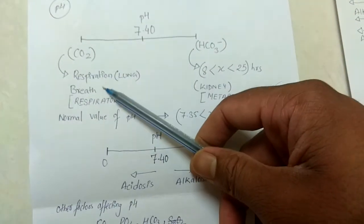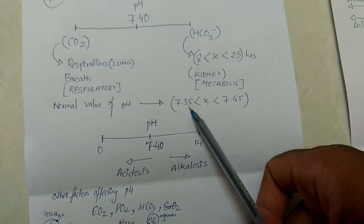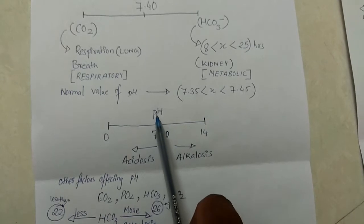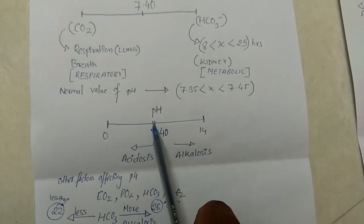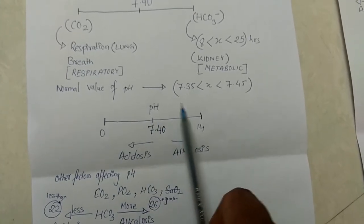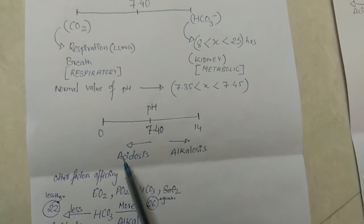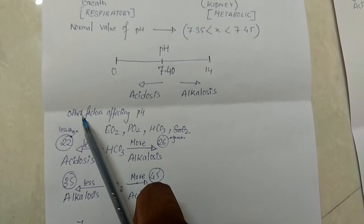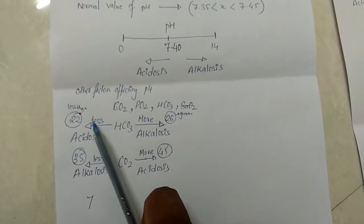Respiration may cause change in lesser time. The normal value of pH is 7.35 to 7.45. On the pH scale, 7 is neutral; below 7 is acidic and above 7 is basic. In medicine, if pH is less than 7.4 we term it acidosis; if it is greater than 7.4 we call it alkalosis.